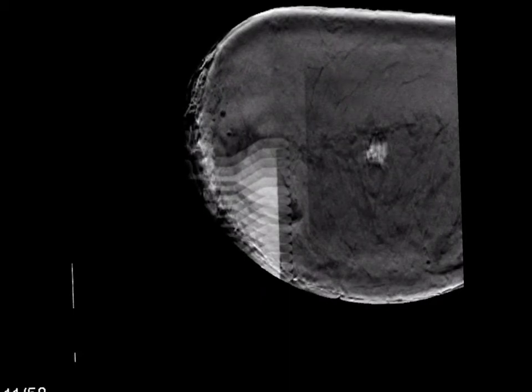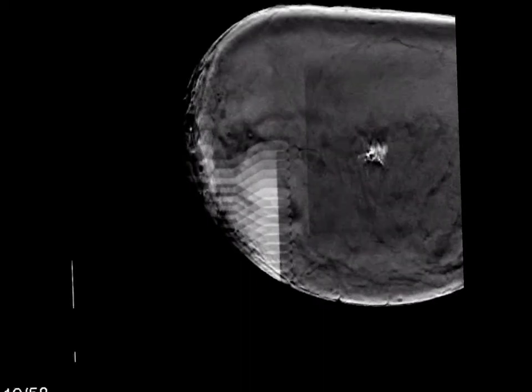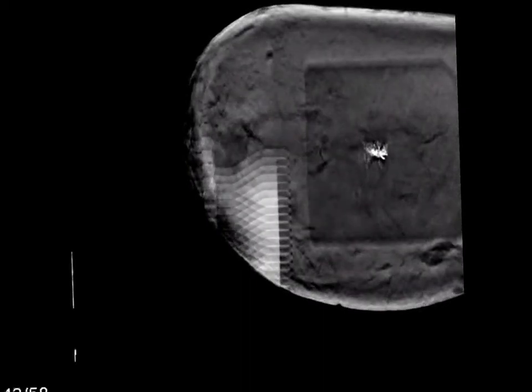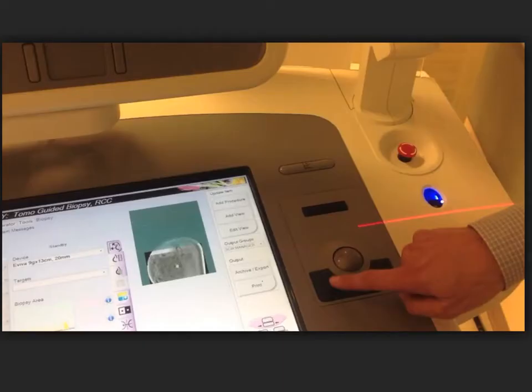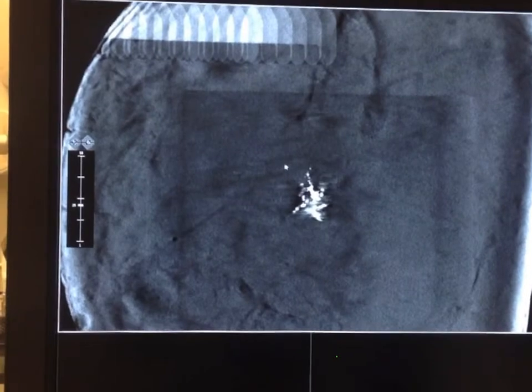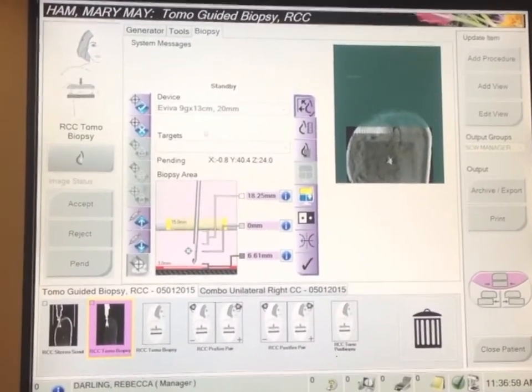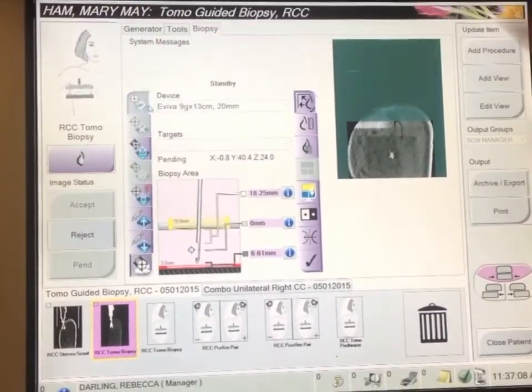Here's a scroll through of the initial set of targeting images from the scout tomo, just showing how that cluster of calcifications comes in and out of the focal plane. On the Hologic affirm unit, you use this scroll bar here to go through the tomographic images to select the slice which shows the target best and then left click to select the target once you have the cursor over the lesion. So you scroll through your tomographic images to find the best target. Once you've found it, left click the mouse in the center of the target.